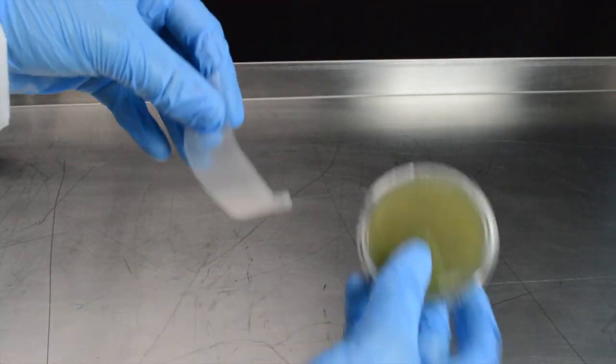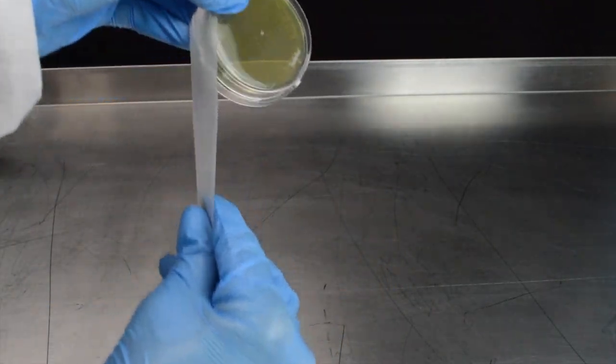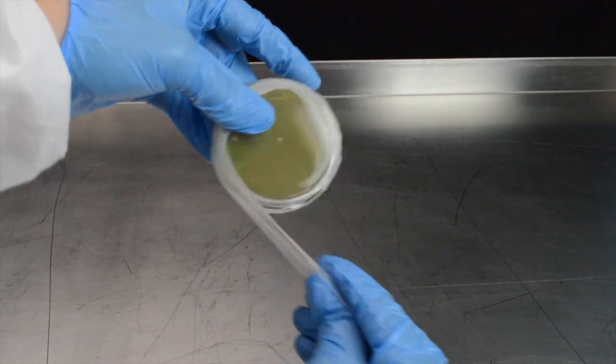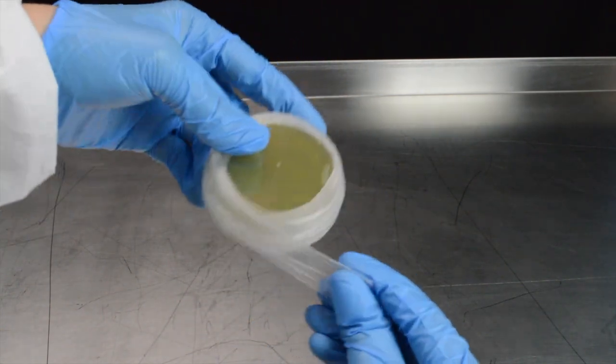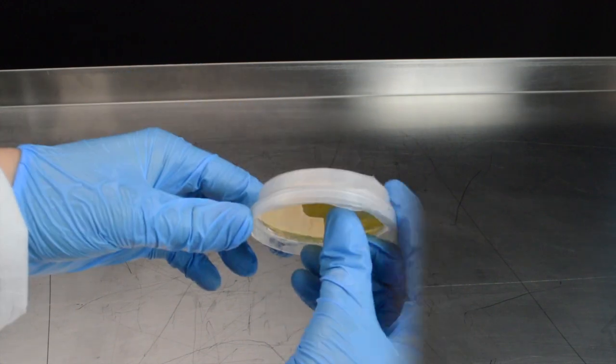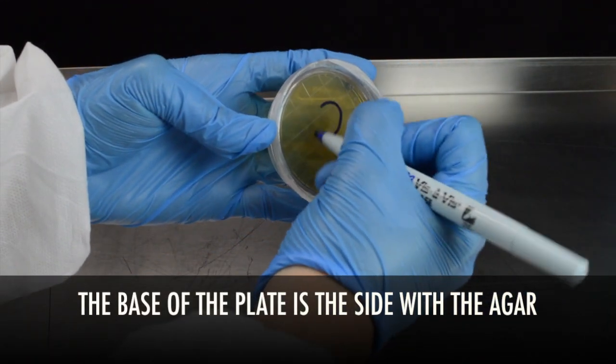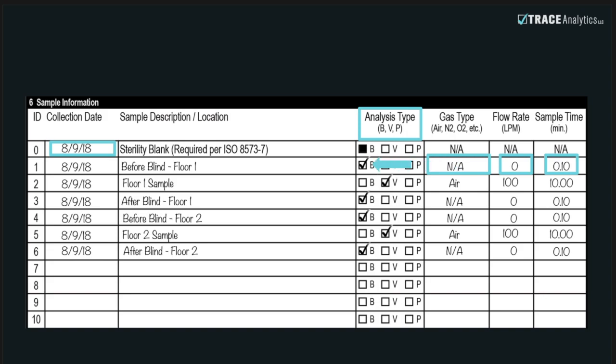Remove a single strip of parafilm from its paper backing and stretch it to wrap around the rim of the plate, securing the lid and base together. Use a permanent marker to label the base of the contact plate with the appropriate number from your chain of custody. Fill out the chain of custody to reflect the labeled plate, date sampled, and description.